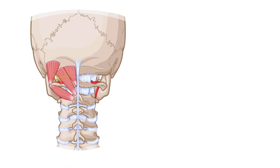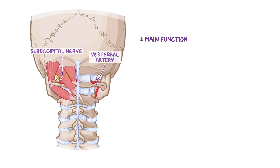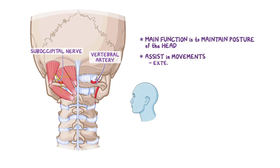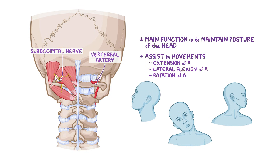All four muscles are supplied by the suboccipital nerve and the vertebral artery, which lie in the central part of the suboccipital triangle. The main function of these muscles is maintaining the posture of the head, but they also assist in movements such as extension, lateral flexion, and rotation of the atlantoaxial joints.